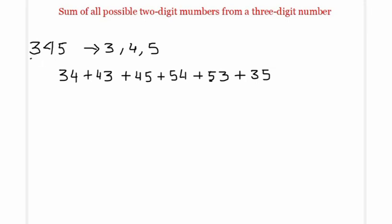Then 45 and its reverse 54, and finally 53 and its reverse 35. So the possible 2-digit numbers from 345 are 34, 43, 45, 54, 53, and 35. Their sum is 264, which is not equal to the original number 345.